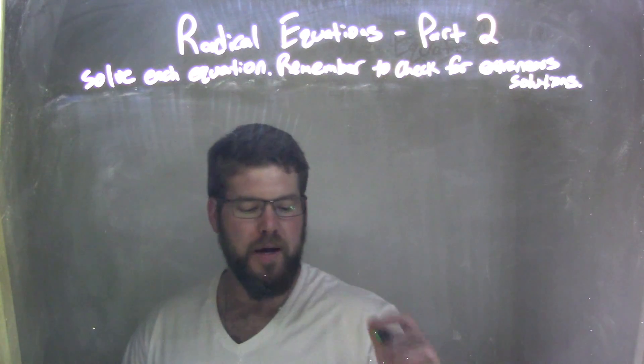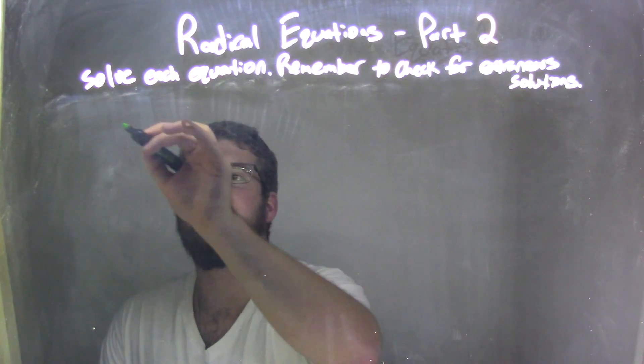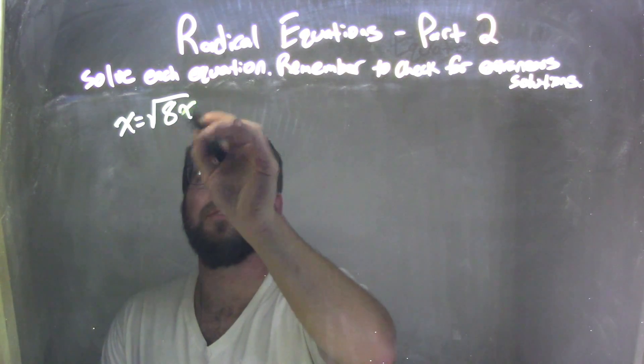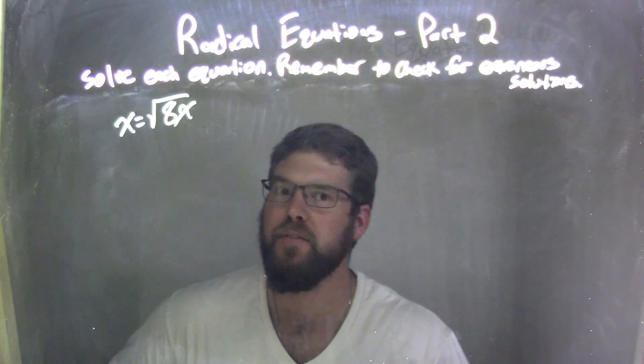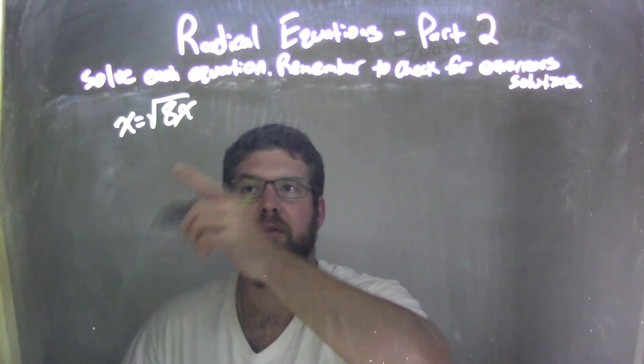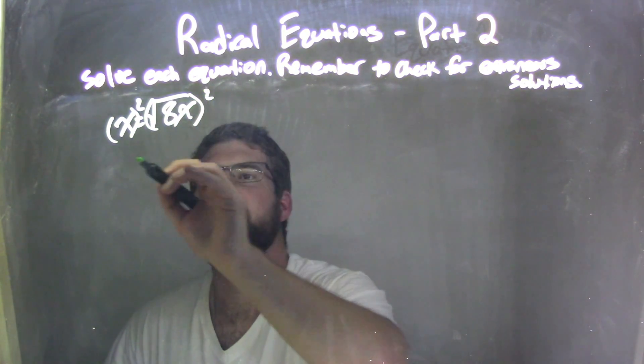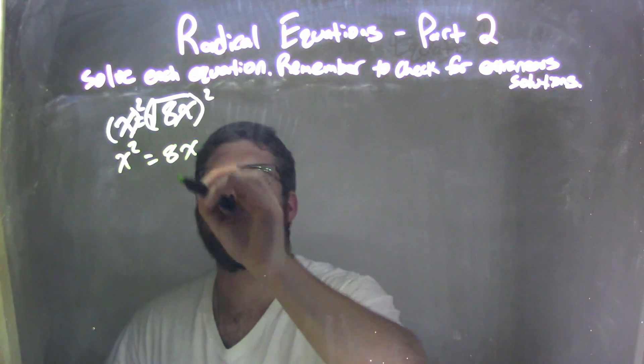If I was given this equation, x equals the square root of 8x, well, my first step here is I need to square both sides to get rid of that radical. So I square both sides here, and I'm left with x squared equals 8x.